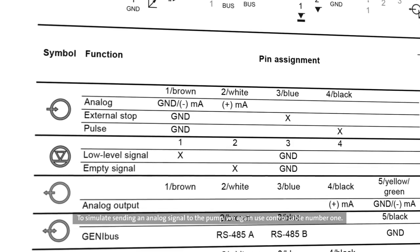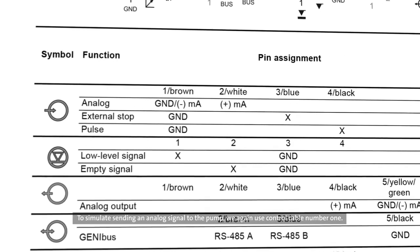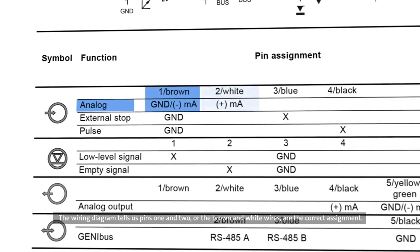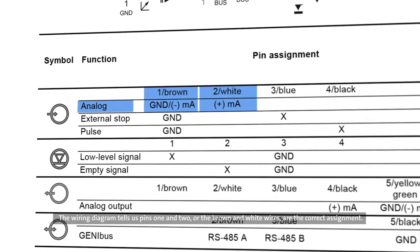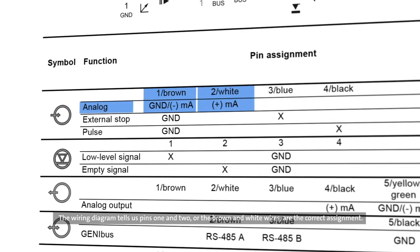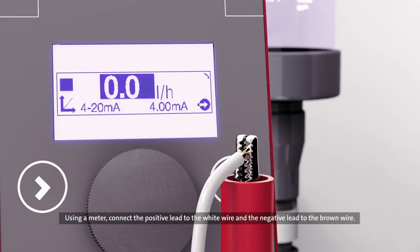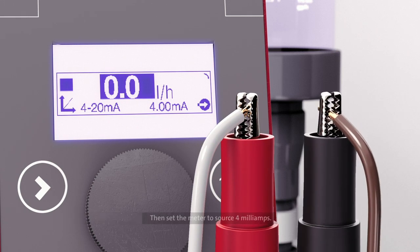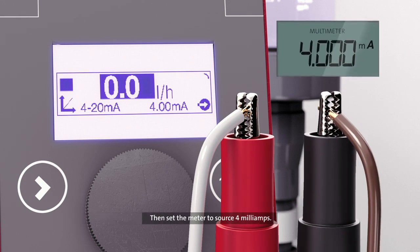To simulate sending an analog signal to the pump, we again use control cable number 1. The wiring diagram tells us pins 1 and 2, or the brown and white wires, are the correct assignment. Using a meter, connect the positive lead to the white wire and the negative lead to the brown wire. Then set the meter to source 4 milliamps. The control cube displays that the current signal is 4 milliamps.